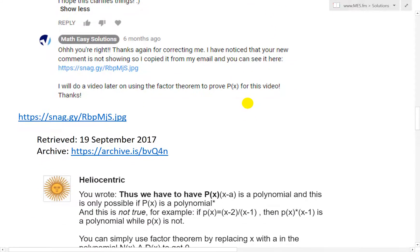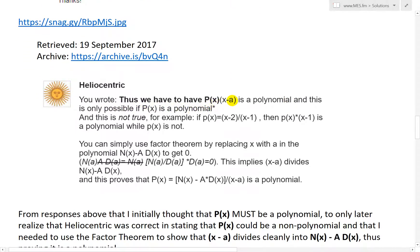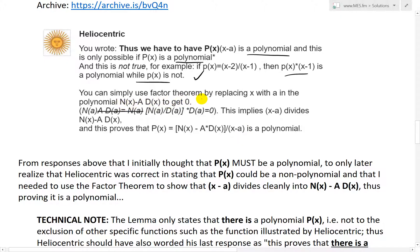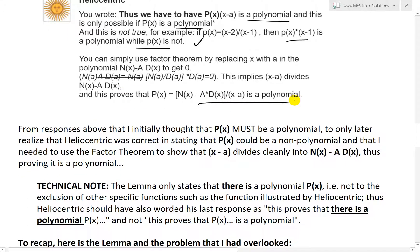Then he replied. It didn't show up there, I don't know why. So I took a screenshot from my email. He wrote, thus we have to have P(x)(x-a) is a polynomial, and this is only possible if P(x) is a polynomial. This is not true because if you just have P(x) equals (x-2)/(x-1), that's not a polynomial. But then P(x) times (x-1) is a polynomial, while P(x) is not. So yes, that is very smart. He said you can simply use the factor theorem by replacing x with a in the polynomial to get N(x) - a*D(x) equals zero and prove it's polynomial.